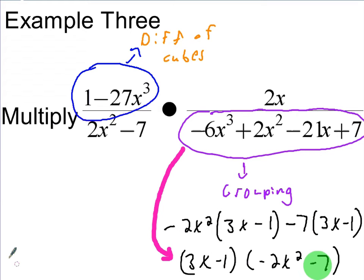The difference of cubes, I'll let you guys use your notes on that. Remember, it's a minus b times a squared plus ab plus b squared. What would your a and b be? What would your a be? 1. And what would b become? 3x.